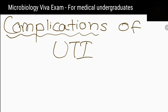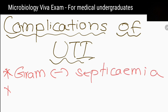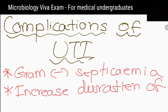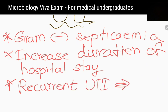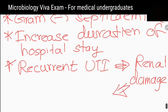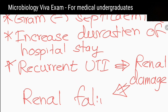What are the complications of urinary tract infection? Gram-negative septicemia, increased duration of hospital stay. Recurrent urinary tract infections can cause renal damage, which can lead to renal failure.